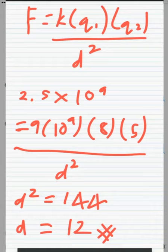We move the number to the same side and we will get d squared equals 144, so d equals 12.